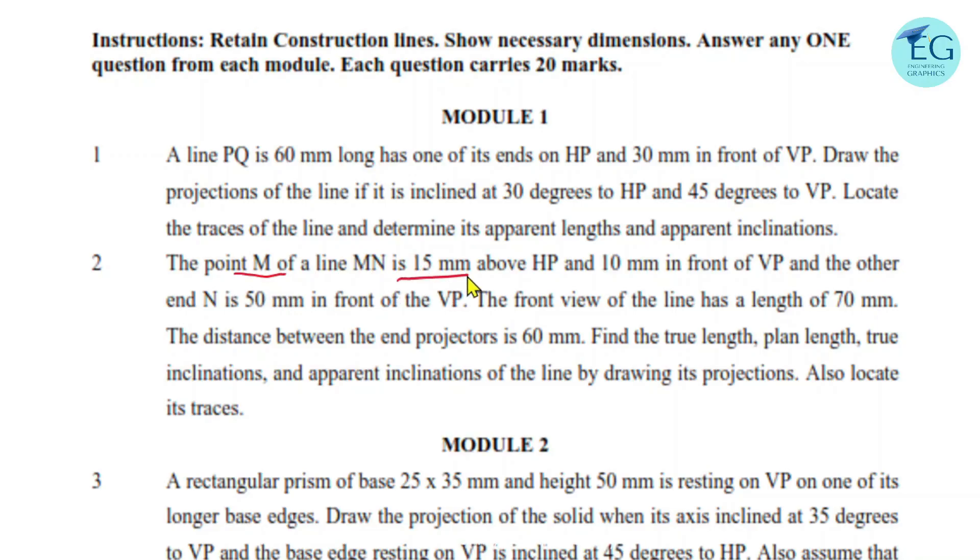The point M of a line MN is 15 mm above HP and 10 mm in front of VP, and the other end N is 50 mm in front of VP. The front view of the line has a length of 70 mm. The distance between end projectors is 60 mm. Find the true length, plan length, true inclinations and apparent inclinations of the line by drawing its projection. Also locate its traces. This question is important.